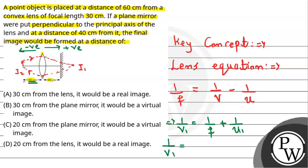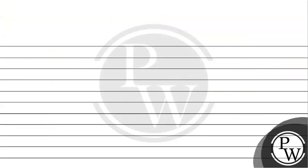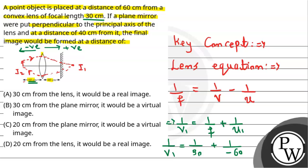So u1 must be how much? Minus 60 cm. So this will become 1/v1 = 1/v1 = 1 by... Now for convex lens, focal length is 30. So we get 1/30 + 1/(-60). So cross multiply and solve this. Image distance will become about 60 cm. That means first refraction from the convex lens, the image will be formed at positive 60 cm, on the right hand side at 60 cm.